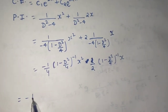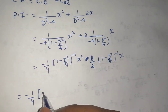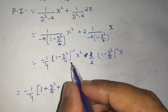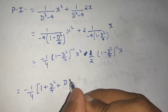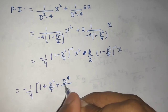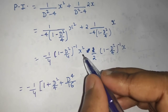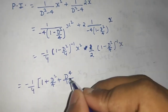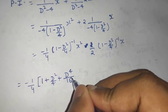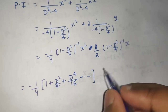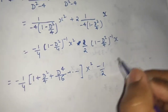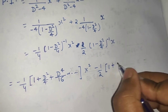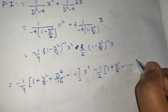So it will be minus 1/4 times (1 plus D²/4 plus D⁴/16 plus ...) operating on x². I don't need to go further because the first derivative of x² is 2x, the second derivative is 2, and the third derivative is 0. Similarly, for the minus 1/2 term, (1 plus D²/4) operating on x — since the first derivative is 1 and the second derivative is 0, no further terms are needed.